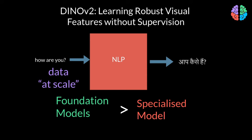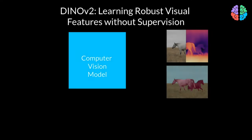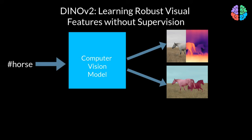But when it comes to images, the story is different because we don't have depth masks or segmentation masks lying around on the web. One way to solve this could be with text guidance — for example, we can use the hashtags from a platform like Instagram, or use the metadata of images and use these as training labels.